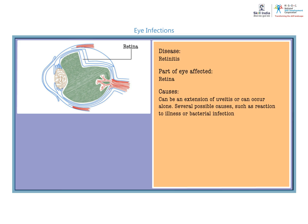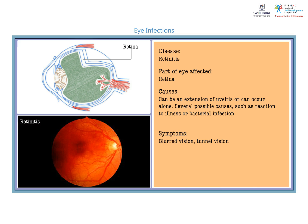Retinitis affects the retina. The causes can be an extension of uveitis or can occur alone. There are several possible causes of retinitis, such as reaction to illness or bacterial infection. The common symptom is blurred vision and tunnel vision. The treatment prescribed is usually steroid eye drops.